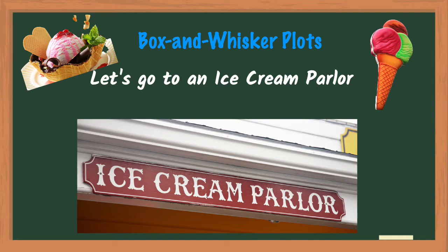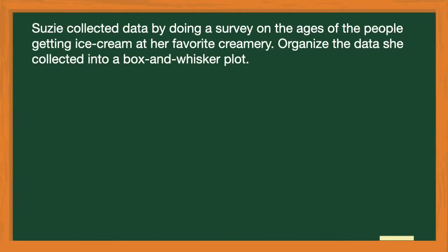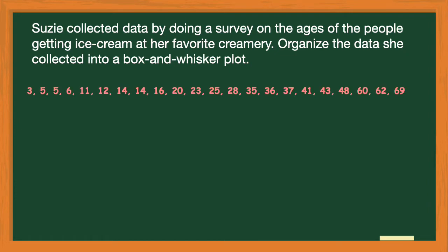But first we're going to go to an ice cream parlor. So here we are at my favorite ice cream parlor, and I am collecting data by doing a survey on the ages of the people going into the ice cream parlor. I collected my data and put my numbers in order from least to greatest, so the youngest customer was three and the oldest was 69.